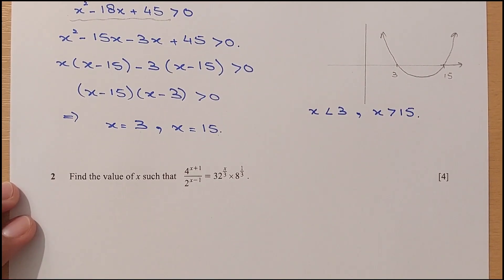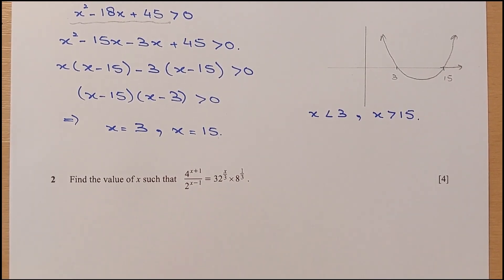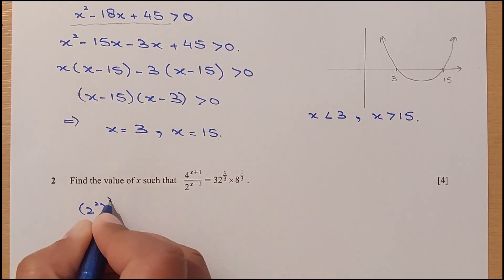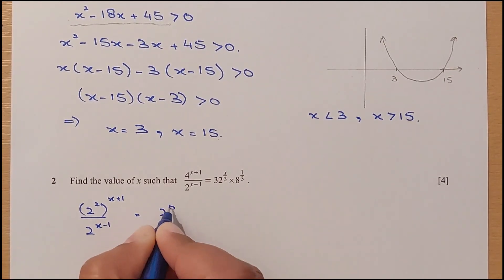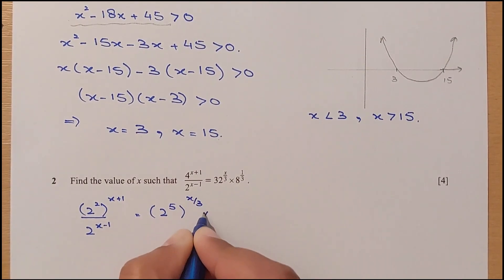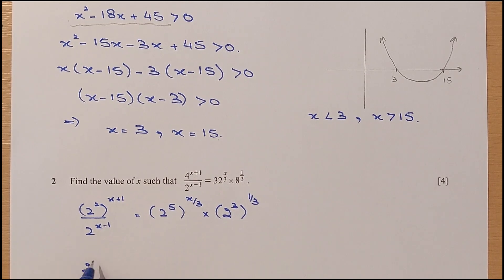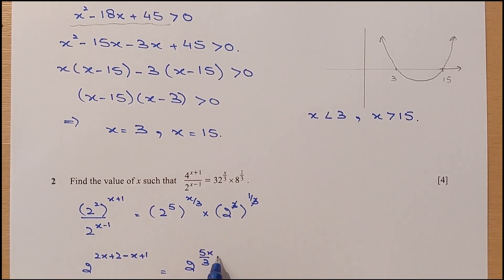Moving to Question 2: find the value of x. We have 4, 2, 32, and 8 — we need to convert all of them to the power of 2. So 4 is 2 squared, giving 2 to the power of 2(x+1) divided by 2 to the power of x minus 1. 32 is 2 to the power 5 with exponent x over 3, and 8 is 2 cubed with power 1 over 3. Simplifying: 2 to the power 2x plus 2, multiplied by 2 to the power minus x plus 1, equals 2 to the power 5x over 3 multiplied by 2 to the power 1.